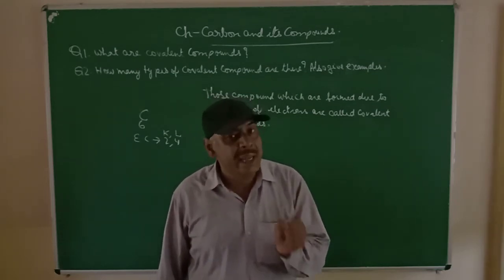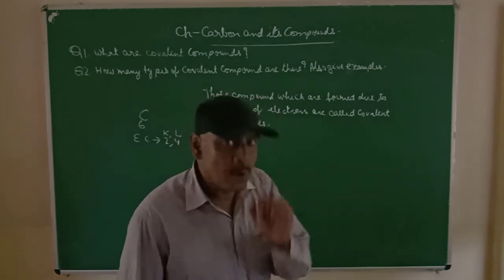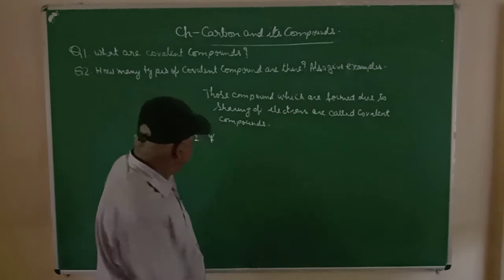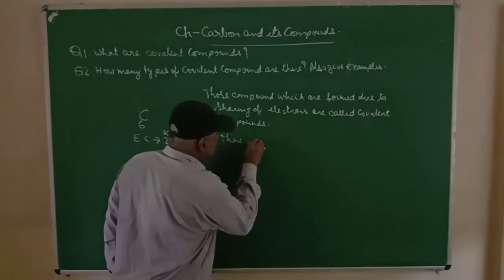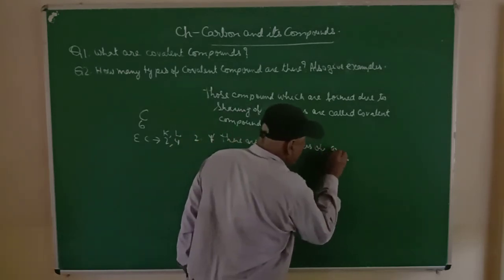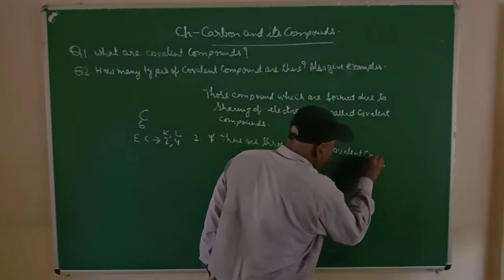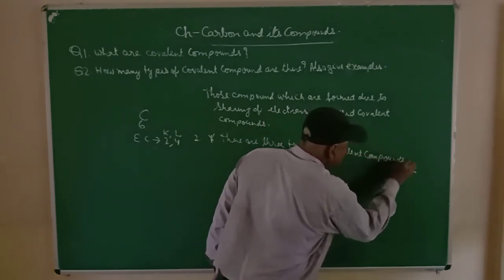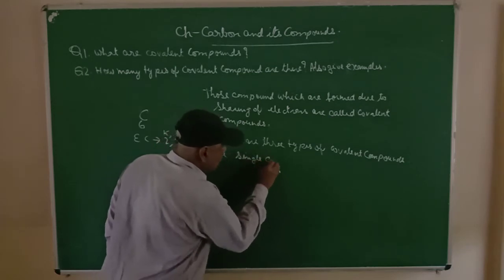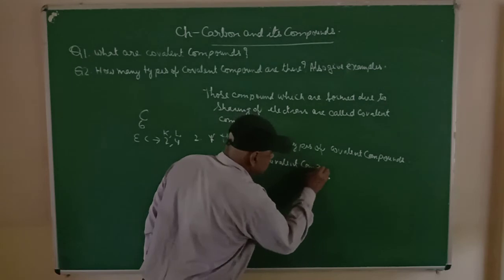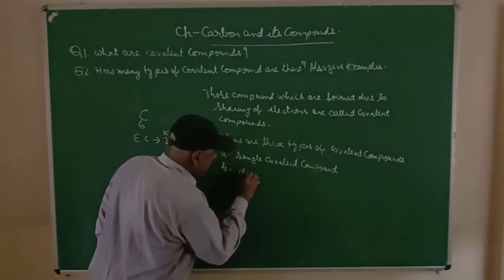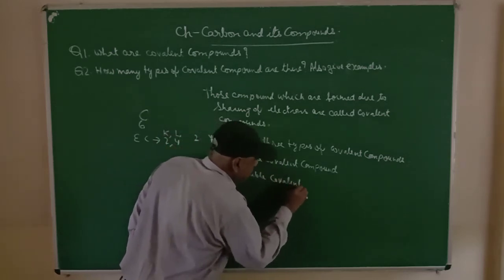There can be sharing of three electrons each between carbon and carbon atoms. So we can say there are three types of covalent compounds: number one, single covalent compound; number two, double covalent compound; and number three, triple covalent compound.